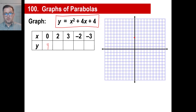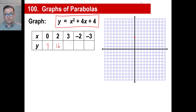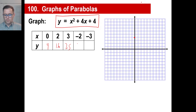For x equals 2, that's 2 squared which is 4, plus 4 times 2 which is 8. So we have 4 plus 8 is 12, plus 4 is 16. So at x equals 2 we're way up at 16. If x is 3, then 3 squared is 9, plus 4 times 3 is 12, giving 9 plus 12 is 21, plus 4 is 25. That's way up there anyway.